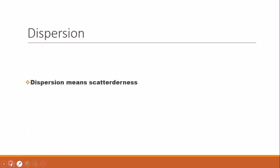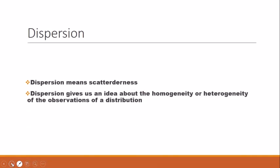In two or more distributions, the central value may be the same, but still there can be wide disparities in the formation of the distribution. Measures of dispersion help us in studying the important characteristics of a distribution. In literal sense, dispersion means scatteredness — how much variability there is between each observation. Dispersion also gives us an idea about the homogeneity or heterogeneity of the observations.